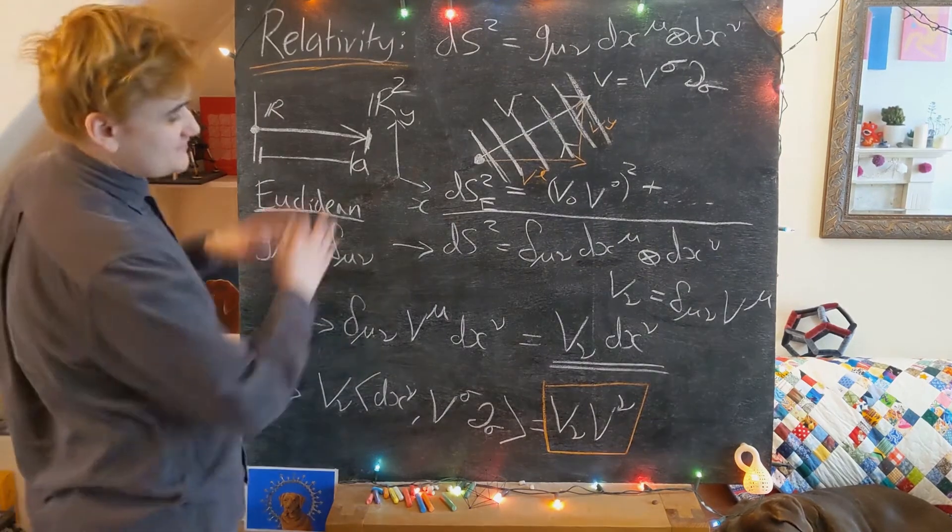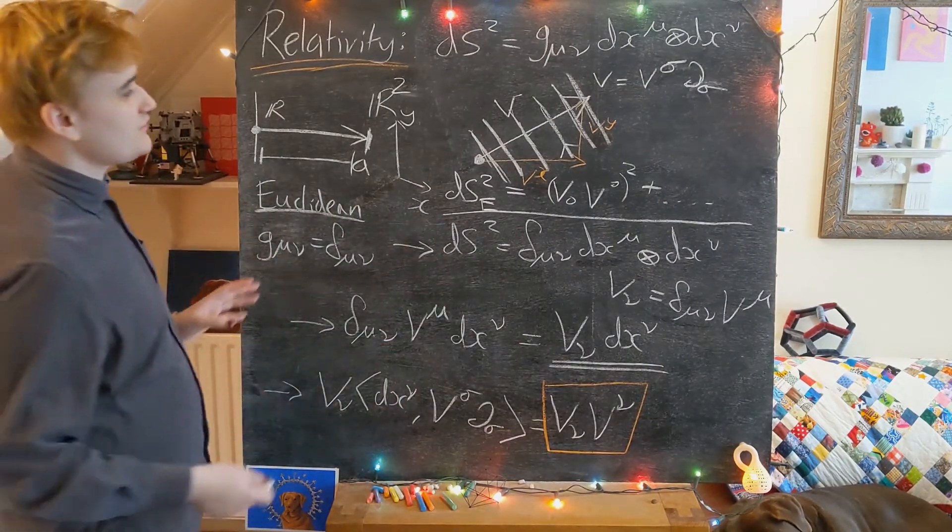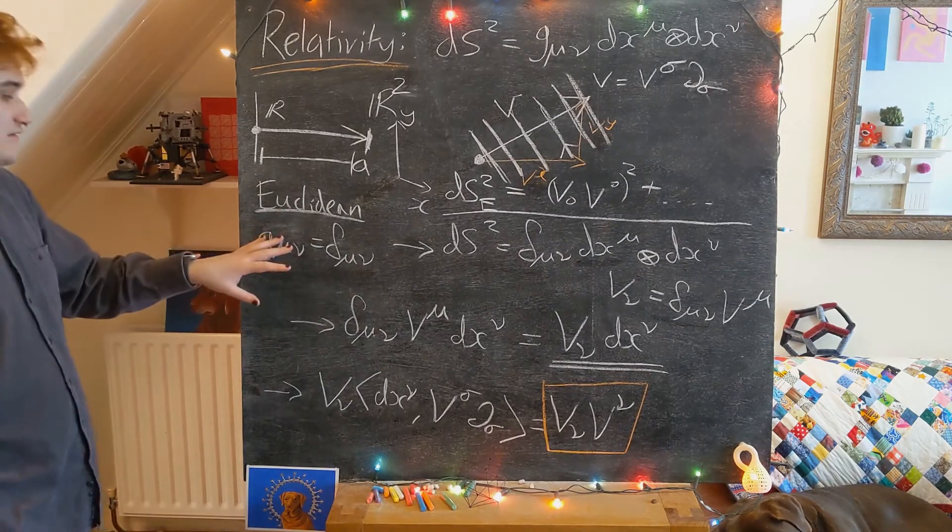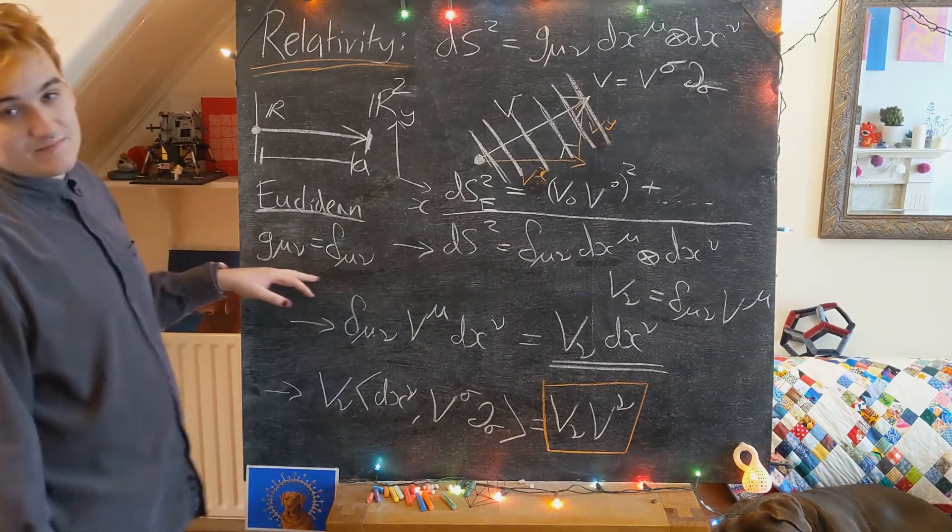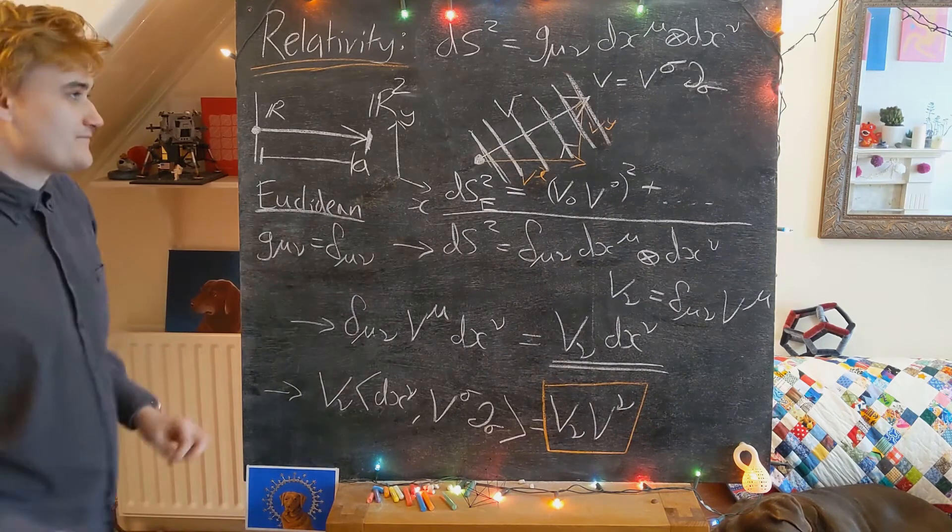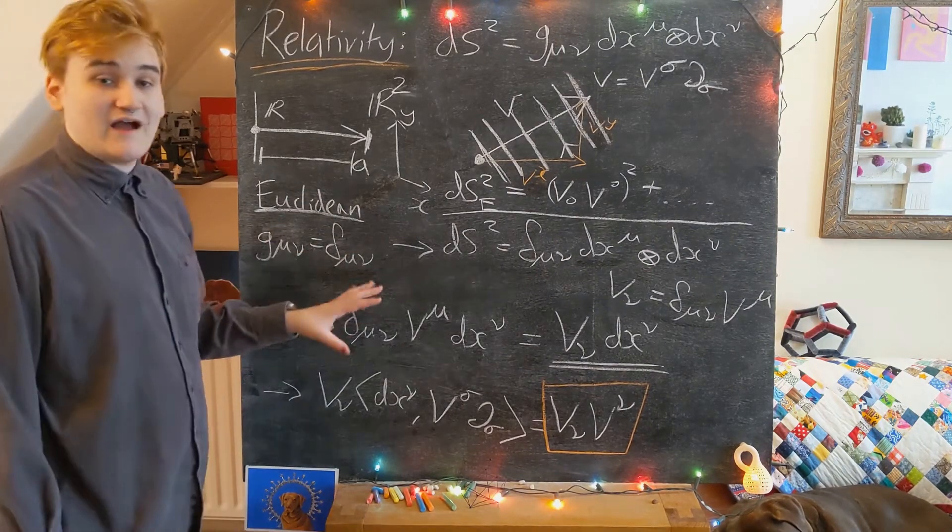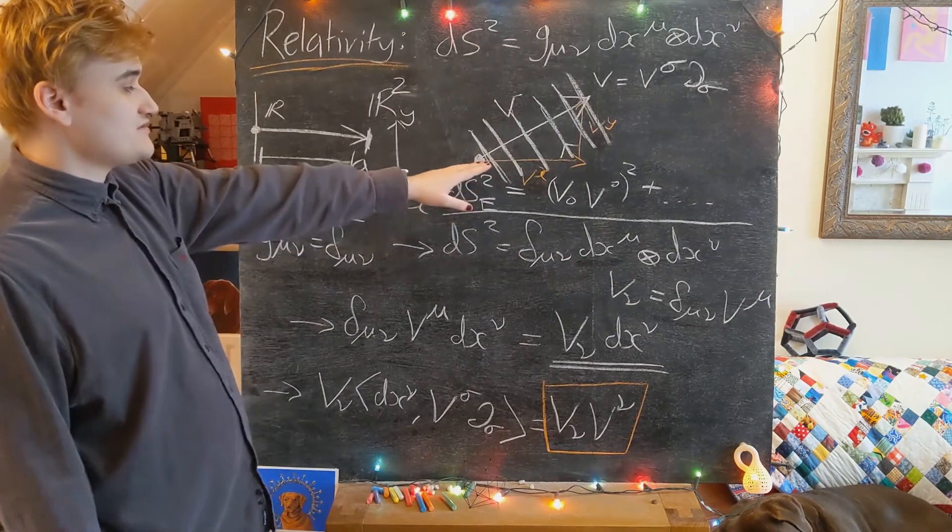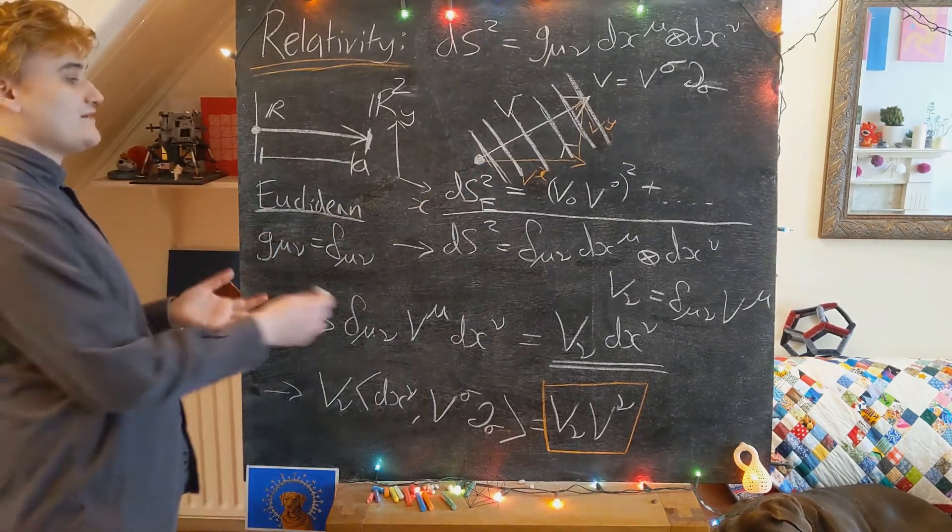So in summary then, I've shown you the really simple calculation of how we first define a Euclidean metric simply as being the identity matrix, and then we went through and we saw how we can use this Euclidean metric to compute now the lengths of vectors.